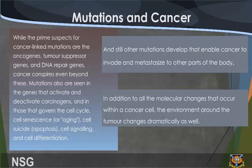Mutations and Cancer. While the prime suspects for cancer-linked mutations are the oncogenes, tumor suppressor genes, and DNA repair genes, cancer involves even more. Mutations are also seen in the genes that activate and deactivate carcinogens, and in those that govern the cell cycle, cell senescence, cell aging, cell suicide (apoptosis), cell signaling, and cell differentiation. Other mutations develop that enable cancer to invade and metastasize through other parts of the body.